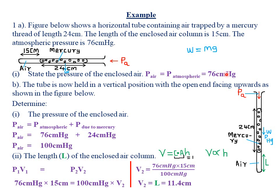In part (b), the tube is now held vertically with the open end facing upwards. When the tube is vertical, mercury will exert pressure on the enclosed air because the pressure due to mercury's weight acts downwards. The total pressure on the enclosed air is therefore the atmospheric pressure acting from the upper end plus the pressure due to the mercury column.